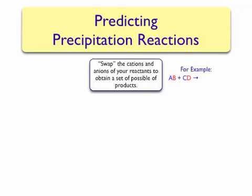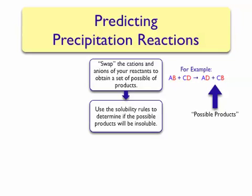For example, if I mix a solution containing compound AB with compound CD, I can get the following products. Compound AD is formed by combining cation A with anion D, and compound CB is produced by combining cation C with anion B. Once we obtain a set of possible products, we can analyze them using the solubility rules to determine which, if any, of the possible products will be insoluble in water.